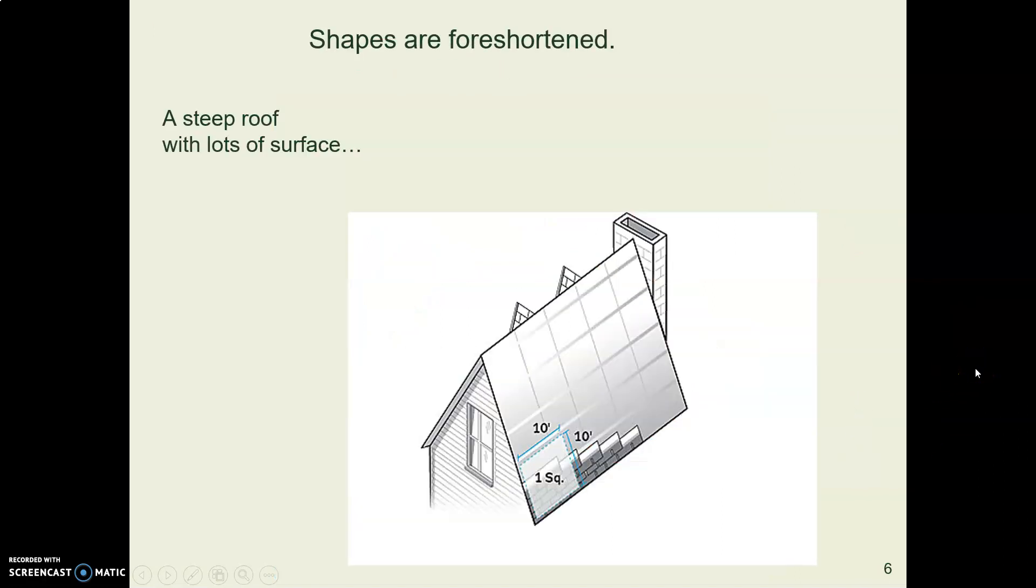Like we saw in the last lecture when we talked about how do you order roofing material by the square. So here's a 10 foot by 10 foot square on this steep roof. Well this roof, as an example, has a lot of surface area and will buy a lot of roofing.